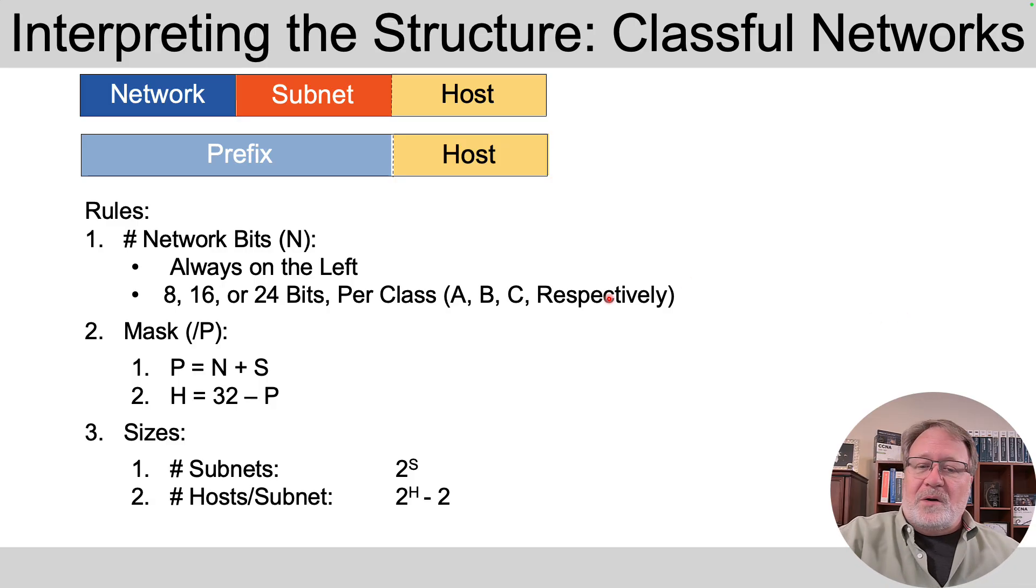The number of network bits, they're always on the left, and it's 8, 16, or 24 of those, depending on whether you're subnetting a class A, B, or C network. So for this discussion right now, we're assuming we're subnetting a class A, B, or C network.